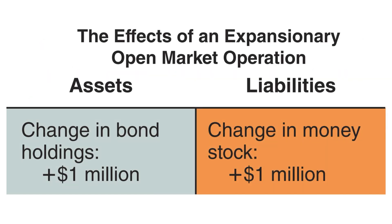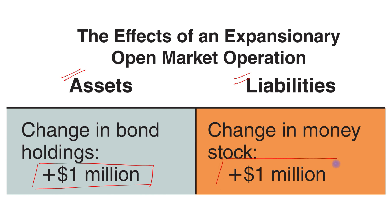Here are the effects of an expansionary open market operation. On one side we have assets and on the other side we have liabilities. On the asset side, the change in bond holdings is plus $1 million, and on the liability side, the change in money stock is plus $1 million. The central bank pays out money, so money in circulation increases by $1 million.